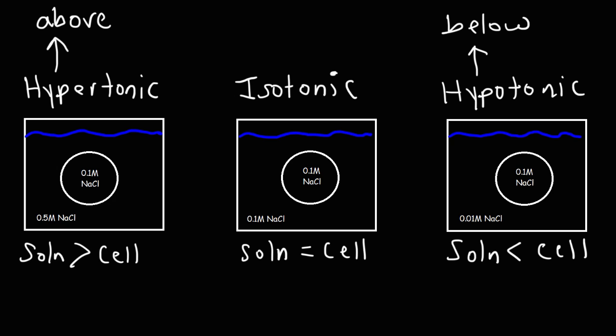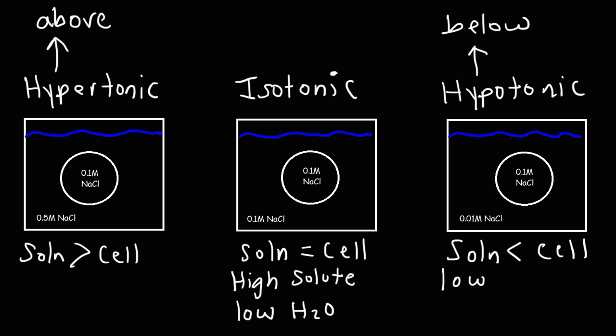When the solute concentration of the solution is high, the water concentration of the solution will be low. Likewise, when the solute concentration is low, the water concentration will be high. In this example, for simplicity, let's assume that the cell membrane is semipermeable — it allows water to flow into and out of the cell, but not ions, not the solute particles.